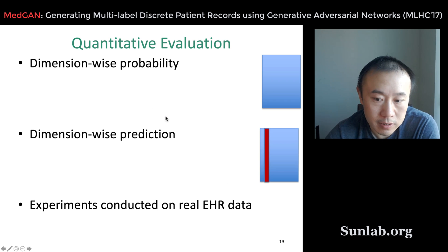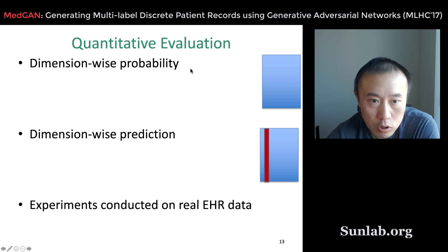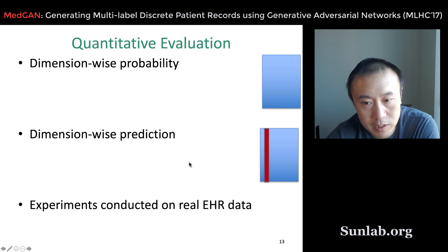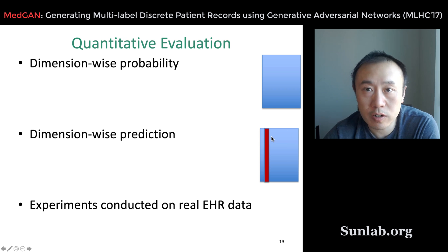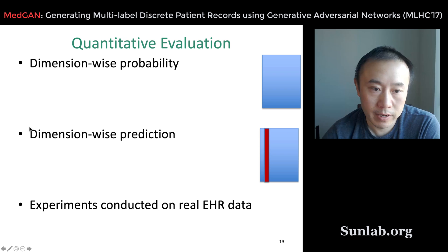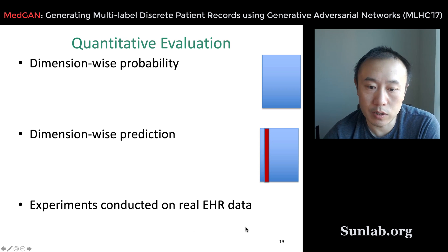Now let's look at the evaluation. We use two different evaluations. One is the marginal distribution, looking dimension by dimension at whether the probability distribution of generated data follows the real distribution. The other is a dimension-wise prediction task: take one feature as the target to predict and use all other features as input to a predictive model. All experiments are conducted on a real EHR data set.